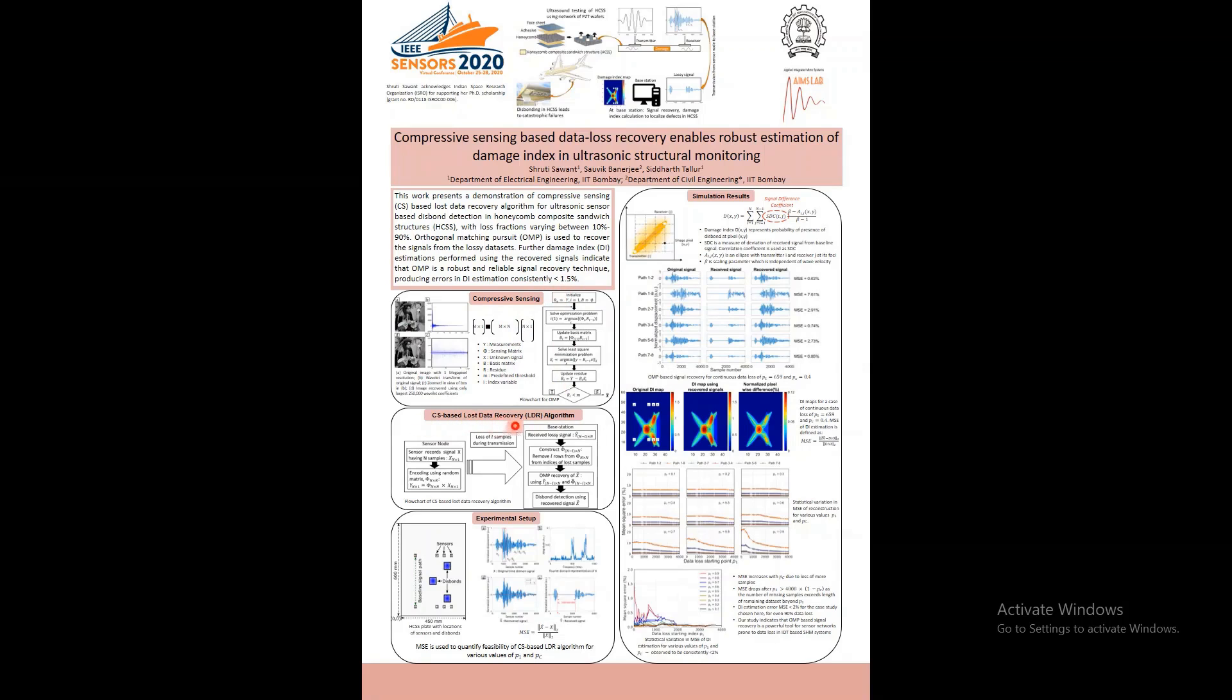In the CS-based lost data recovery technique at the base station, a received lossy signal is treated as a compressed signal and is recovered using OMP. Applicability of this algorithm is explored for a honeycomb panel consisting of 3D disbonds using a network of 8 sensors. Time series data corresponding to 6 different sensor paths is obtained and is observed to be sparse in the Fourier domain.